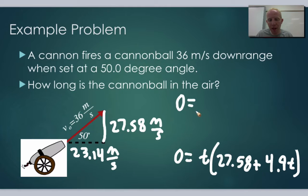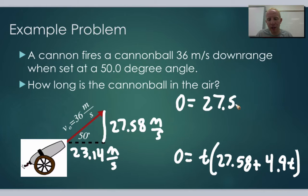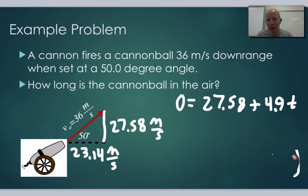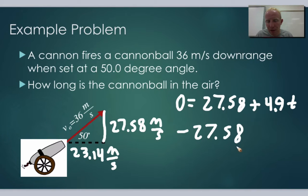We make the inside part equal to zero: 27.58 plus 4.9t equals 0. Moving 27.58 to the other side gives us negative 27.58.